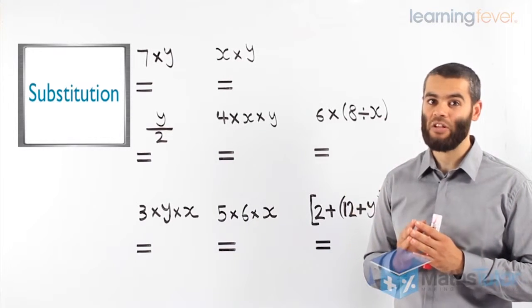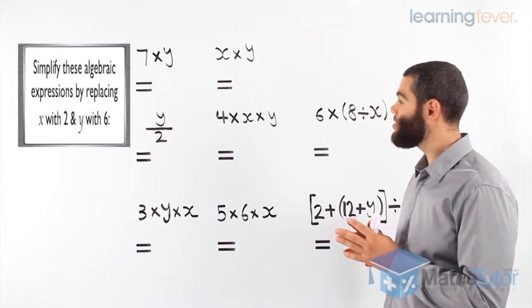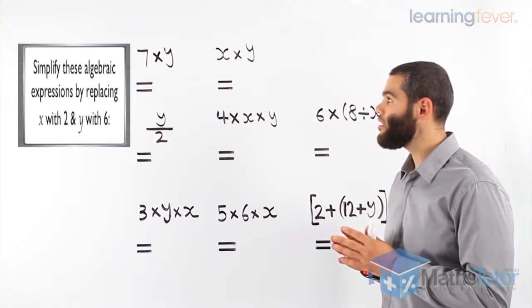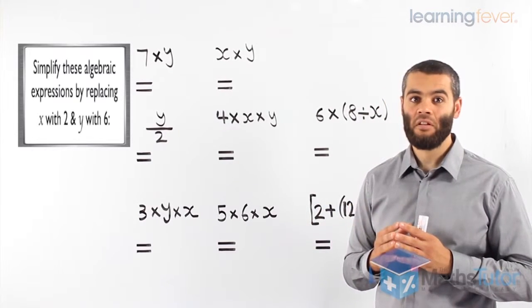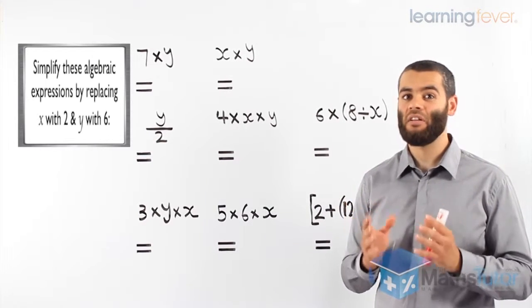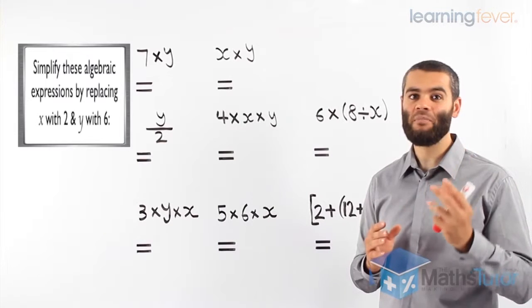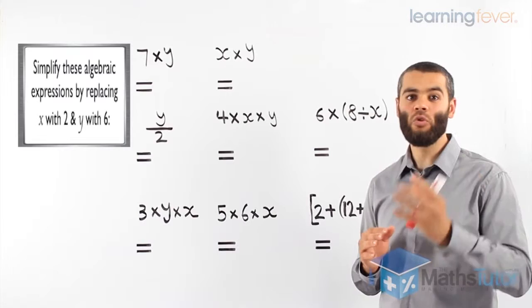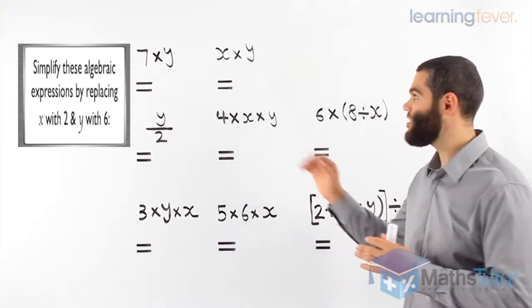Let's see how they actually work. In this example, we are asked to solve the following questions. And we are told that x equals 2 and y equals 6. So, wherever you see an x, you put a 2. And wherever you see a y, you put a 6. Let's see how it is. We're replacing, we're substituting a pronumeral with a number. We're substituting x with 2 and we're substituting y with 6. Let's do it.